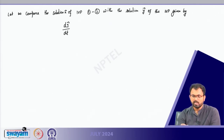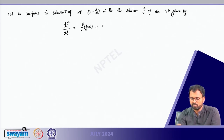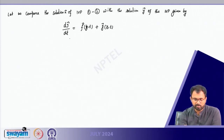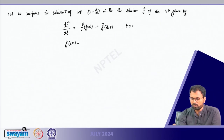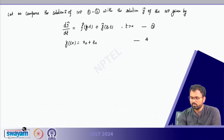So dy/dt equals f(y, t) plus g(y, t), with y(t₀) equal to x₀ plus z₀ — let us call these equation 3 and equation 4. We assume that f is Lipschitz continuous with constant L. Then since f is Lipschitz continuous, both x and y will exist uniquely by Picard's theorem, and the solutions x(t) and y(t) exist uniquely on some time interval [t₀, T] which is a subset of the original interval I.